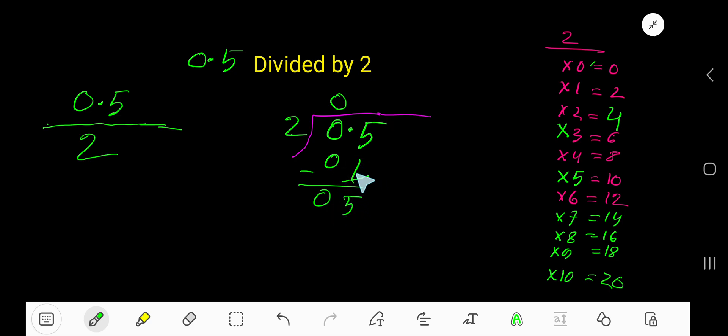Bring down this 5, but before this 5 there is a decimal. Decimal must come to the quotient directly.